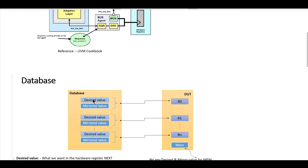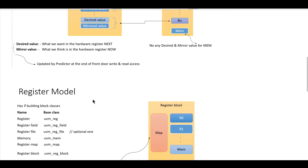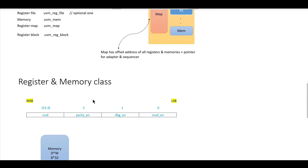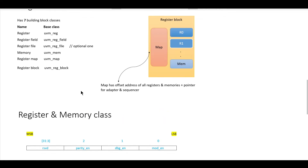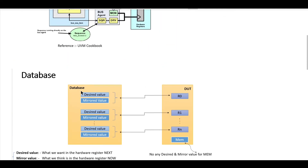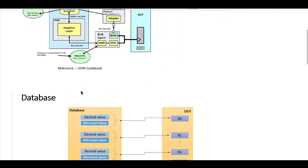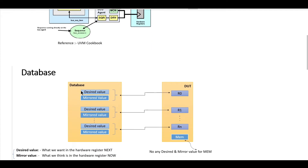Now in this video we will try to understand how we can define a register and memory class. For example, if our DUT has one register and one memory, how we can define them using the UVM layer. Before moving to that, let me give you some information related to the UVM RAL database.